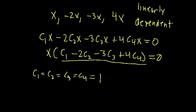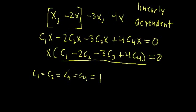Conceptually, two linearly dependent functions means you can scale one function to make it cancel with another. For example, if our two functions were just x and minus 2x, we can scale one by negative 2 to make them cancel out. You can think of it as having an almost redundant function — multiplying by some constant, they cancel out.